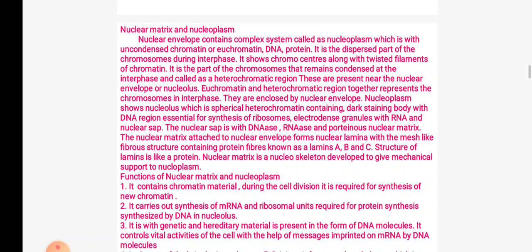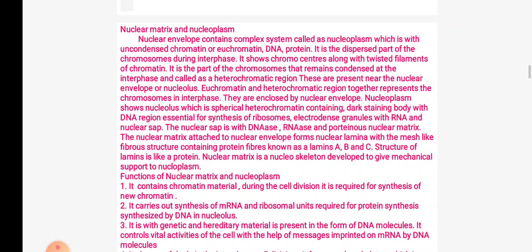The structure of lamins is like a protein. Nuclear matrix is a nucleoskeleton which develops mechanical support to the nucleoplasm. Functions of nuclear matrix: it contains chromatin material; it carries out mRNA and ribosomal unit synthesis; it is the genetic and hereditary material in the form of DNA molecules; it controls vital activities of the cell with the help of mRNA and DNA; and it plays a useful role in cell division, forming a nucleoskeleton helpful for spreading of the entire nuclear region.